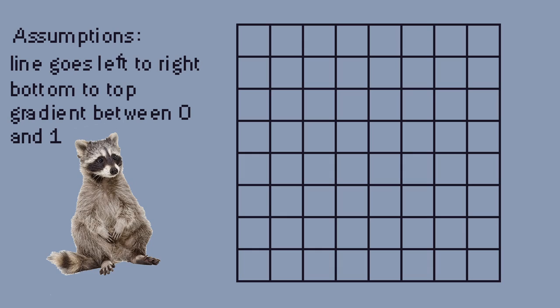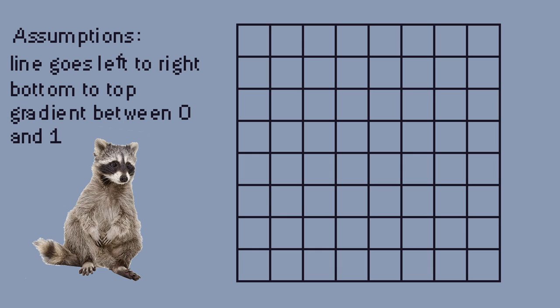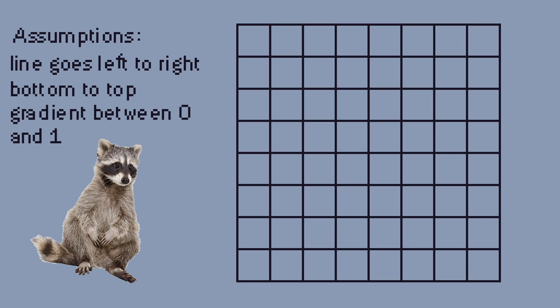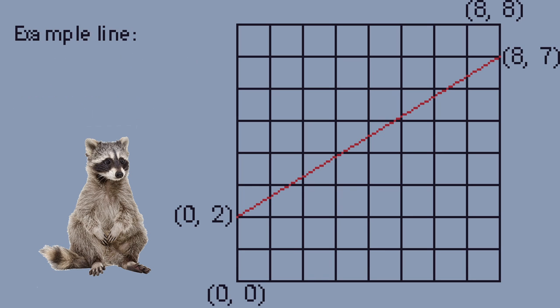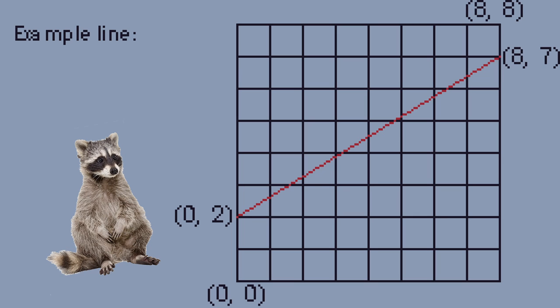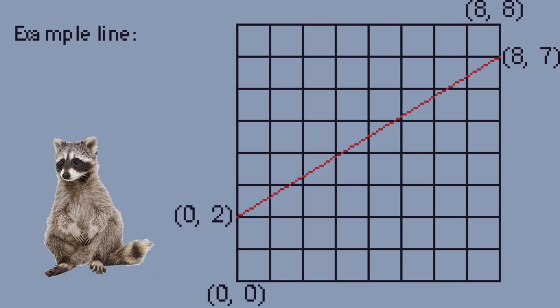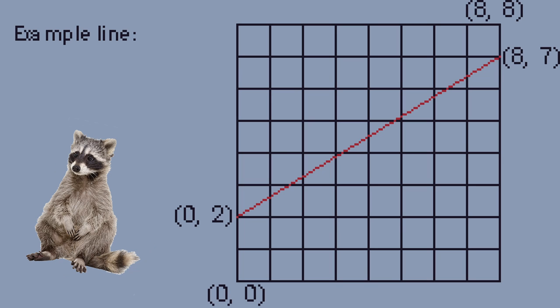We're also going to use a few assumptions. The line is going from left to right, and bottom to top, and the gradient is between 0 and 1. Essentially, we want our algorithm to loop through every X pixel, determine the Y value, and then color the pixel accordingly.